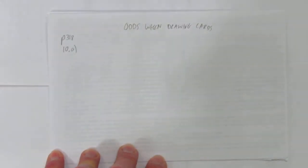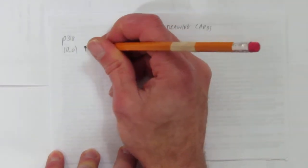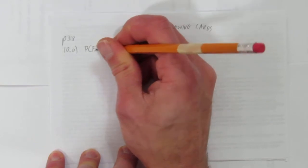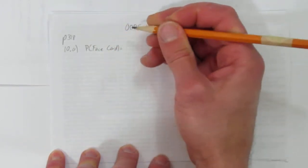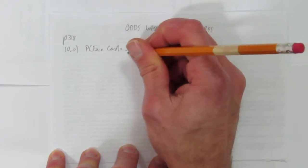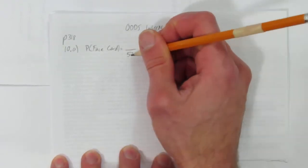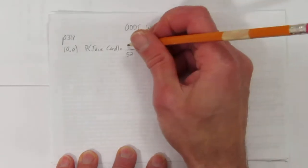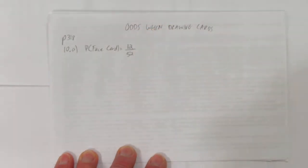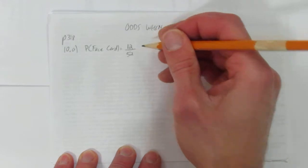So before we figure out the odds against, let's figure out the probabilities. First, the probability of getting a face card. Well, in a standard deck, there are 52 cards. So the total's out of 52, what's the probability of getting a face card? It's just however many face cards there are divided by 52. And in a standard deck, there are 12 face cards. So the probability of getting a face card is 12 out of 52.